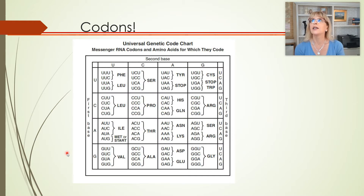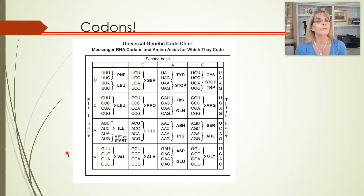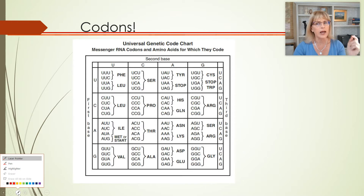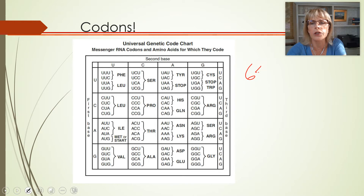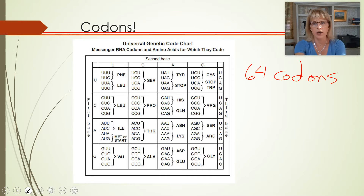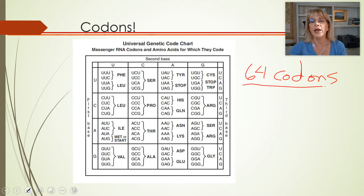It's because the genetic code is described as degenerate. Degeneracy of the genetic code sounds like a value judgment, but it's not. It actually describes the way life has evolved this particular system. There are 64 unique codons — if you make three-letter combinations of these four nucleotides, you can make 64 unique codons.